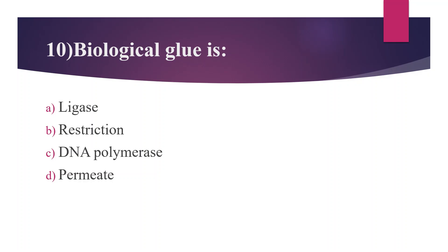Tenth Question: Biological glue is. Option A: Ligase. Option B: Restriction endonuclease. Option C: DNA Polymerase. Option D: Permease. Answer is Option A, Ligase, also known as genetic glue or molecular glue. It helps in joining two fragments of DNA strands by sealing the gaps between them, including during DNA replication.